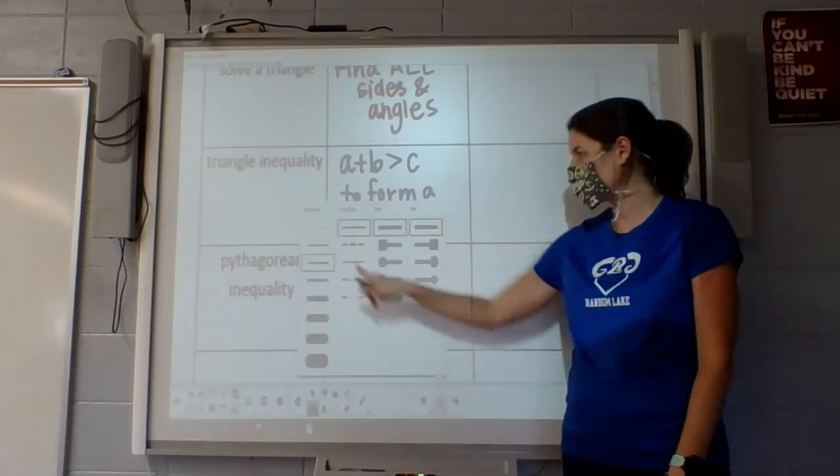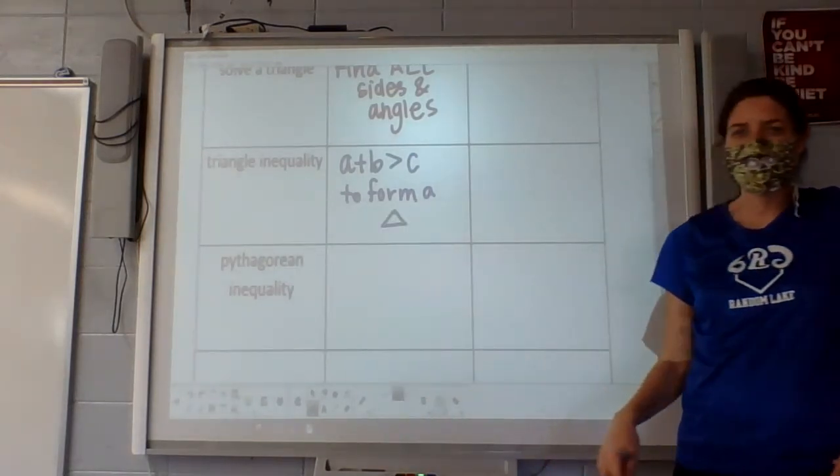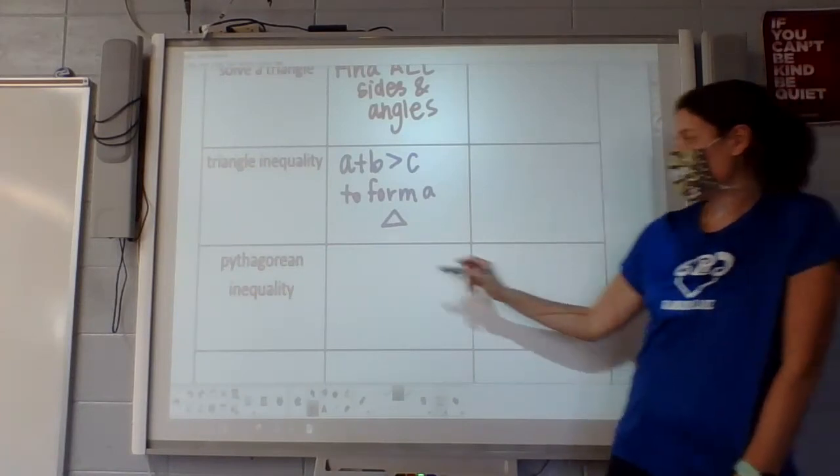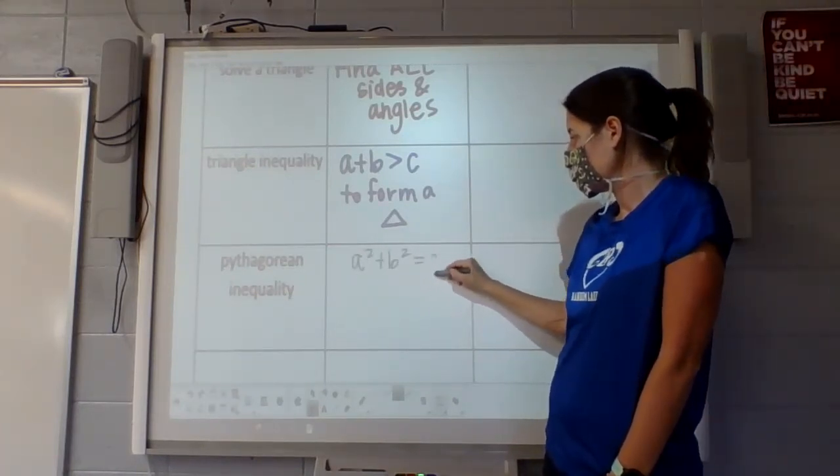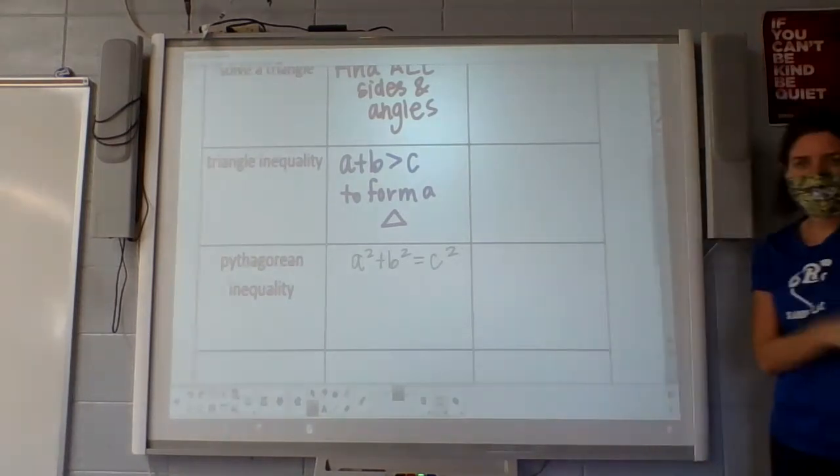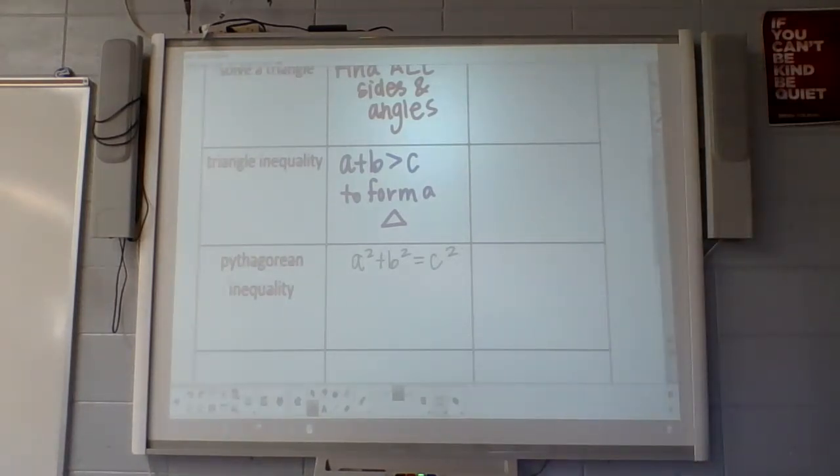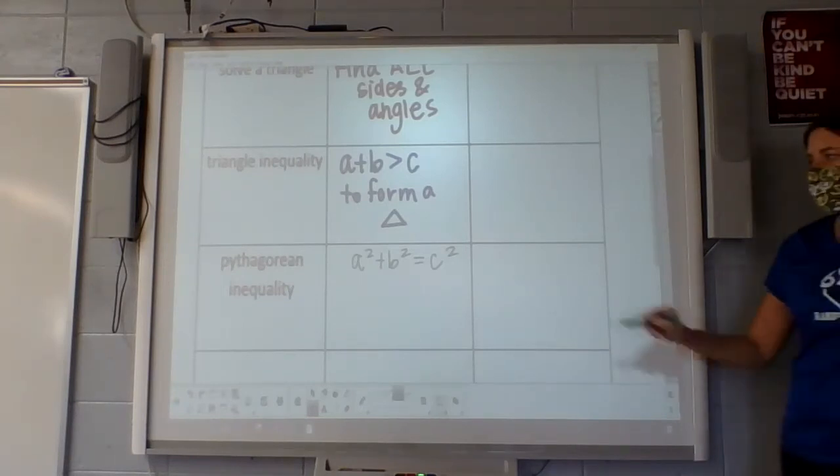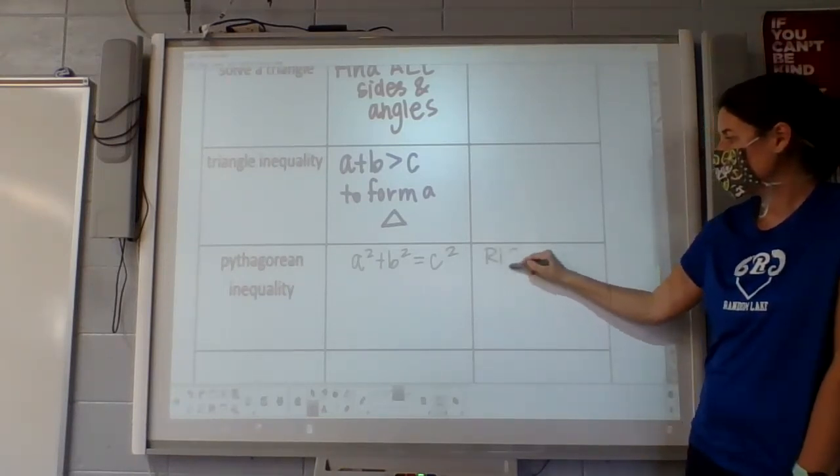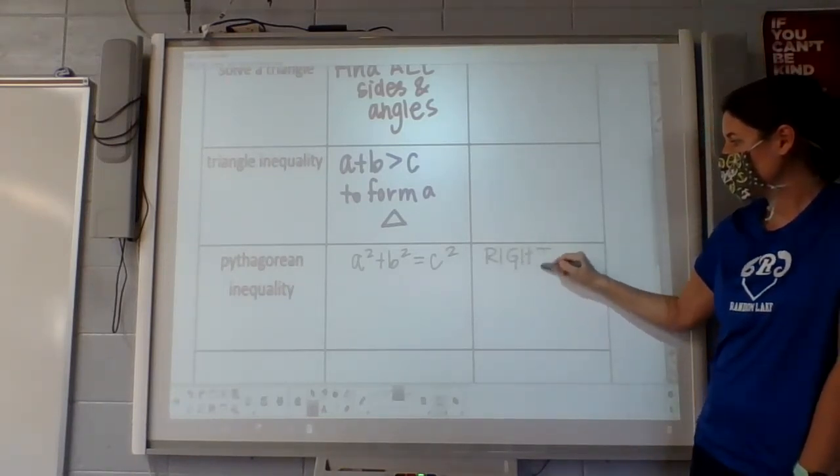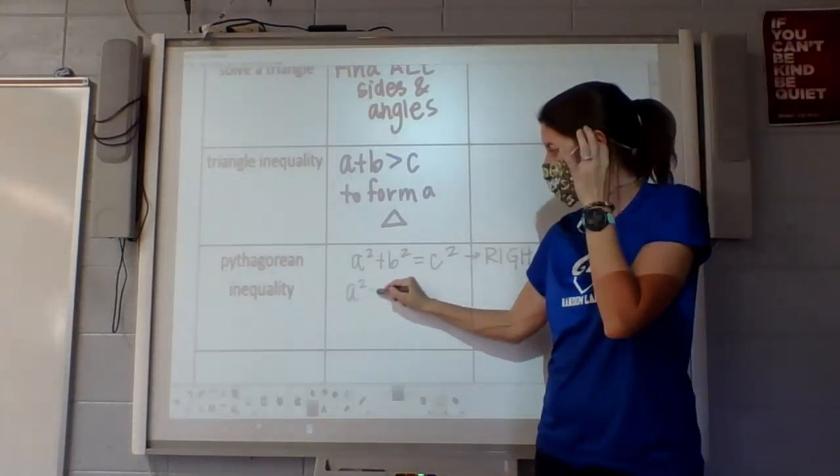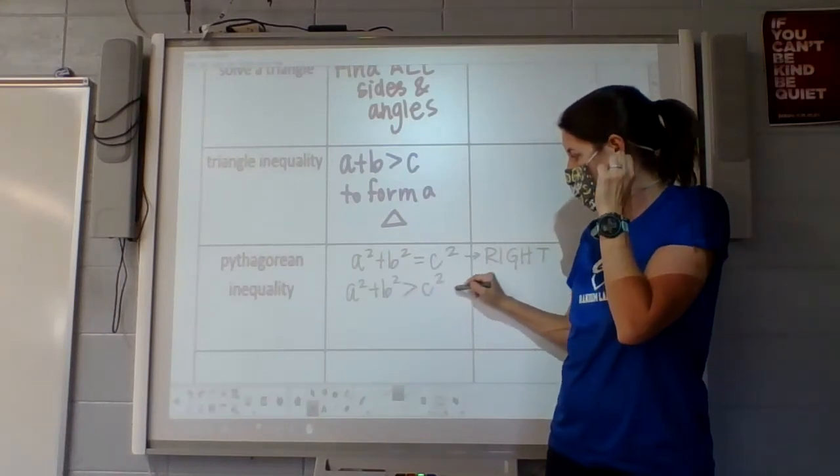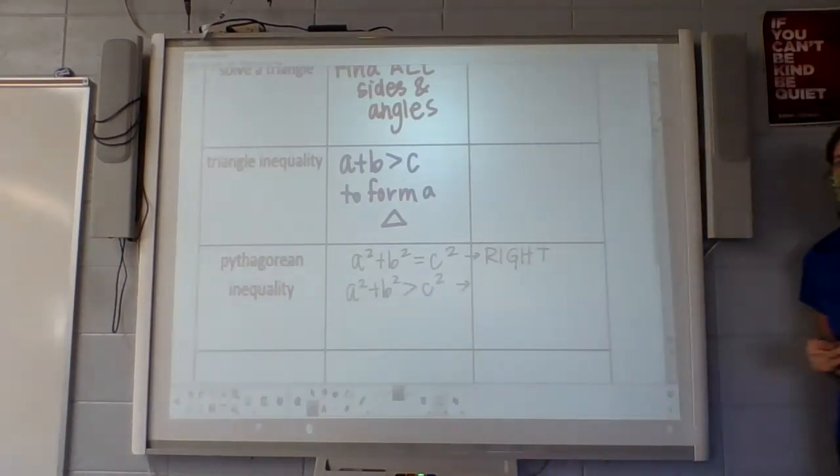And then we get more specific. So, once we know it's a triangle, we can tell if the triangle is acute, obtuse, or right. So, if a squared plus b squared equals c squared, what do we know about the triangle? It's right.